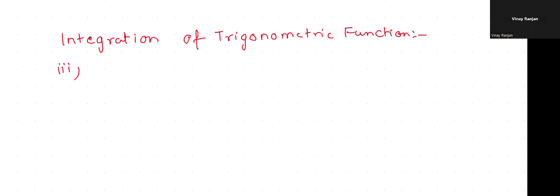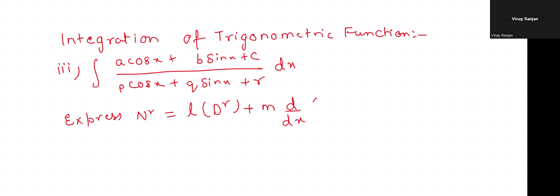If you get a question like a cos x plus b sin x plus c divided by p cos x plus q sin x plus r dx, in this case you have to express the numerator equals l into denominator plus m into differentiation of denominator plus n, and then proceed.